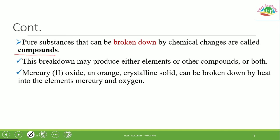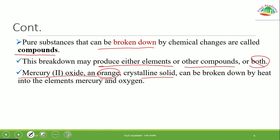Compounds are substances that can be broken down by chemical reaction. A compound is made of two or more elements chemically combined. When broken down, this may produce either elements or other compounds. For example, mercury oxide is an orange crystalline solid that can be broken down by heat into mercury and oxygen — both elements.